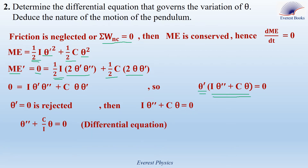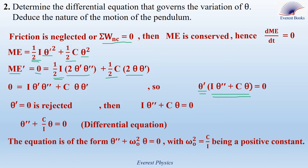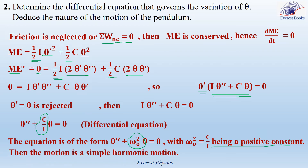The equation is of the form theta double-prime plus omega naught squared times theta equal 0, with omega naught squared equal to C over I being a positive constant. Therefore, the motion is simple harmonic motion.